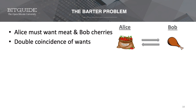Certain conditions must be met for trade to happen. The first is that Alice must want the meat and Bob must want the cherry. This is what economists call the double coincidence of wants, and this makes things a bit hard. If Bob doesn't really like cherries and instead wants some grain, then Alice wouldn't be able to trade her cherries for meat. Both parties will be out of luck — Bob can't get rid of his surplus and Alice wouldn't get what she wants.